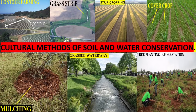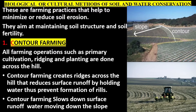Biological or cultural methods of soil and water conservation are farming practices that help to minimize or reduce soil erosion. They aim at maintaining soil structure and soil fertility.